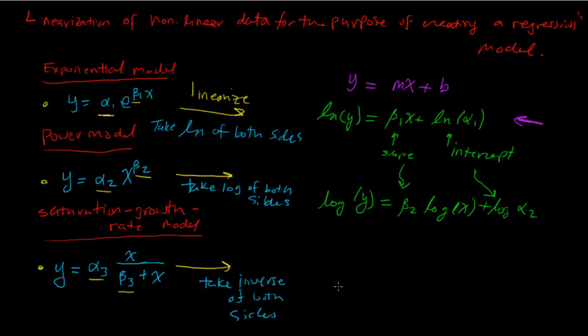And similarly, we can invert this data, and then we get data that's in the form of 1 over y is equal to beta 3 over alpha 3 times 1 over x plus 1 over alpha 3. So if we were to plot this, we basically have the same thing. This would be our new y data, this would be our slope data, and this would be our intercept.